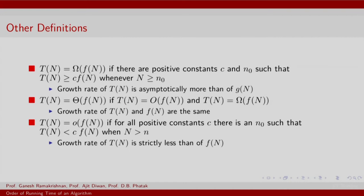Let us formalize these definitions. T(n) is omega of f(n) if there are positive constants c and n_naught such that T(n) >= c * f(n) whenever n >= n_naught. This is an asymptotic lower bound — the growth rate of T(n) is asymptotically at least that of f(n). T(n) is theta of f(n) if they have similar growth rates. T(n) is small o of f(n) if for all positive constants c there is an n_naught such that T(n) is strictly less than c times f(n) when n is greater than n_naught. That is, the growth rate of T(n) is strictly less than that of f(n).